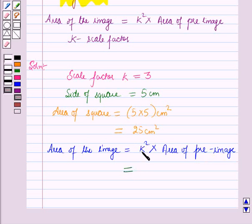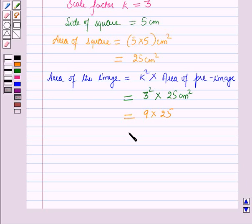Now we will put the values of k and the area of the pre-image here. The value of k is 3, so it will be 3 square into area of the pre-image which is 25 cm square, which is equal to 3 square is 9 into 25, which is equal to 225 cm square.